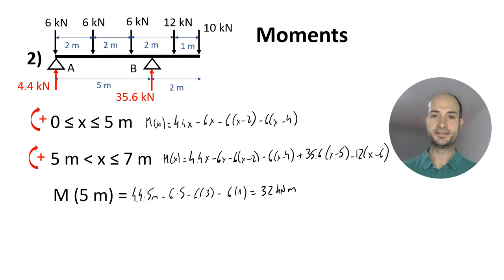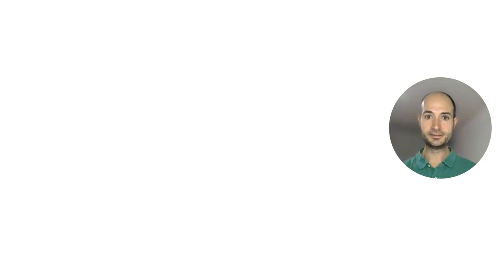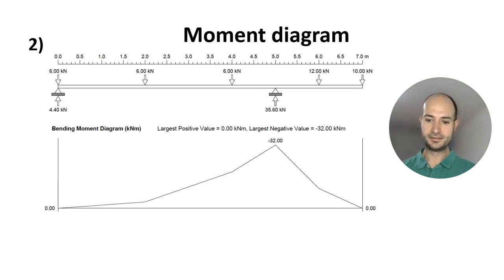Now, as before, if you want to get the complete moment diagram, we just apply different values for X. And you do this diagram. As you see now, we have the whole moment diagram negative, because the biggest loads in this example are on the cantilever. Let's solve now exercise 3.